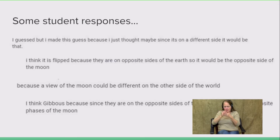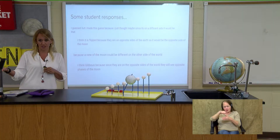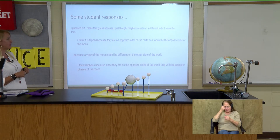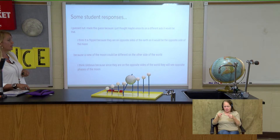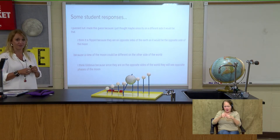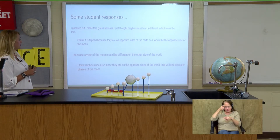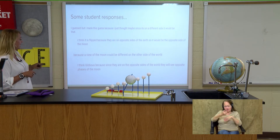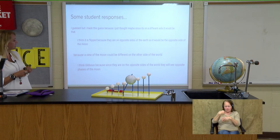These are some responses I got from my students. One student said, 'I guessed, but I made this guess because I thought maybe since it's on a different side, it would be that moon' — so this student was thinking it was something other than the crescent. Then another student said, 'I think it's flipped, because they're on opposite sides of the Earth, so it would be opposite sides of the moon.' Another said, 'The view of the moon would be different on the other side of the world.' And then: 'I think gibbous, because since they're on opposite sides of the world, they see opposite phases of the moon.'